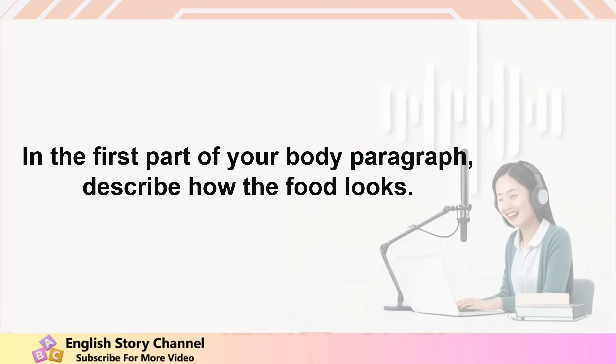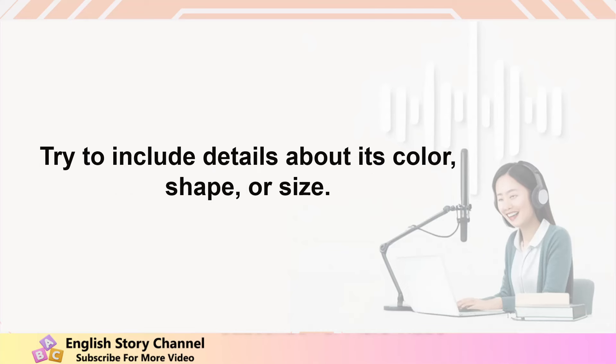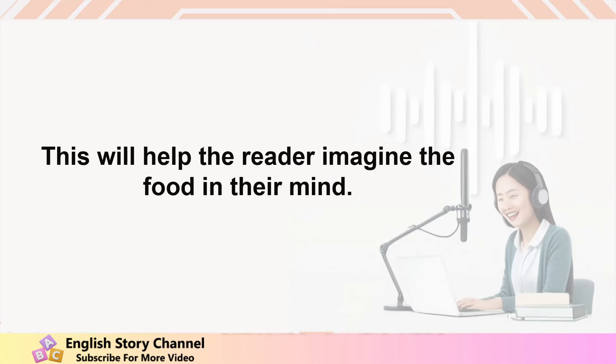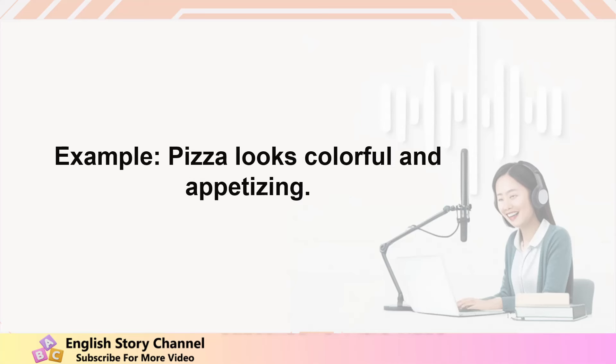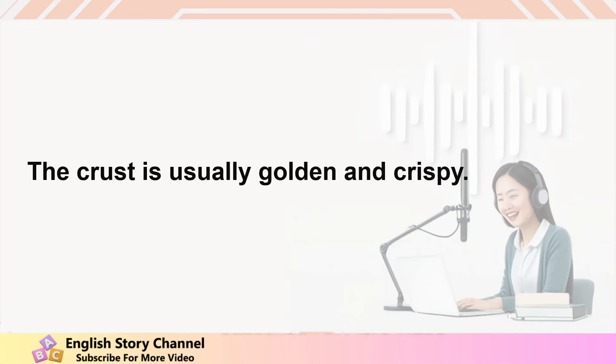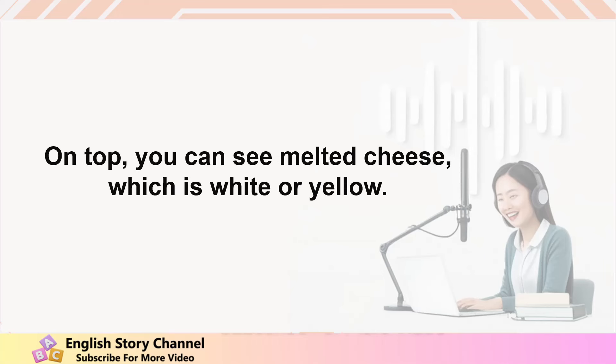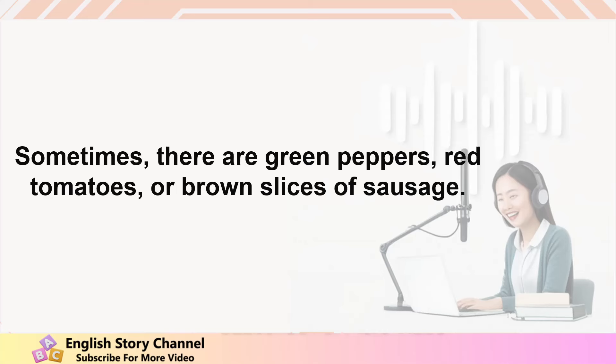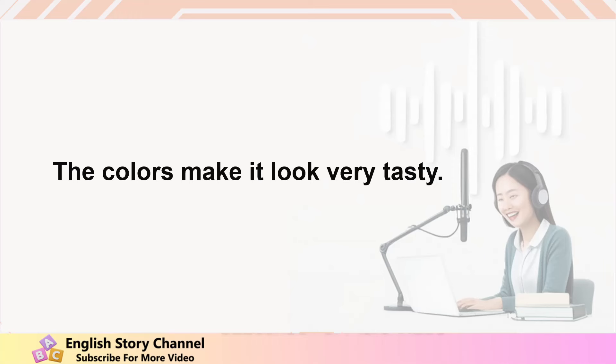Describe the appearance. In the first part of your body paragraph, describe how the food looks. Try to include details about its color, shape, or size. This will help the reader imagine the food in their mind. Example: Pizza looks colorful and appetizing. The crust is usually golden and crispy. On top, you can see melted cheese, which is white or yellow. Sometimes there are green peppers, red tomatoes, or brown slices of sausage. The colors make it look very tasty.